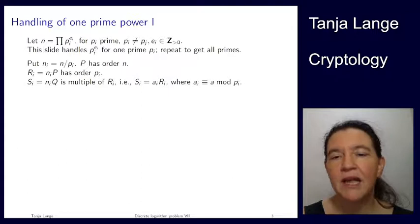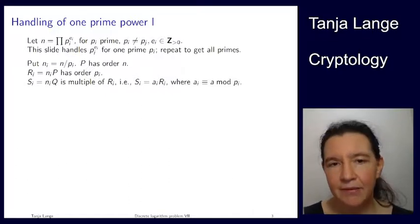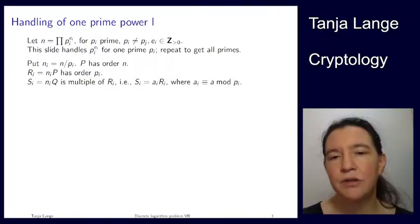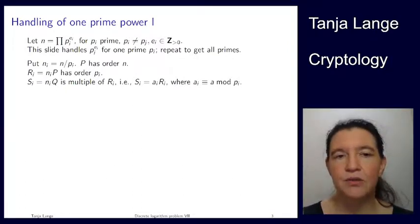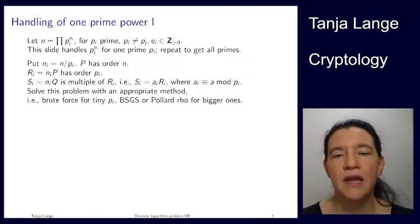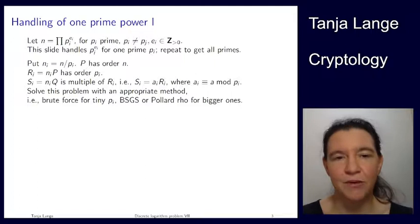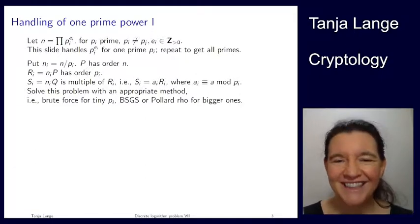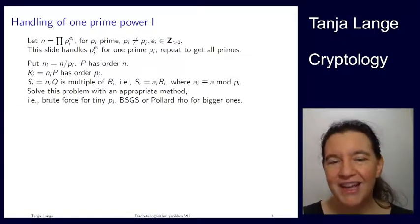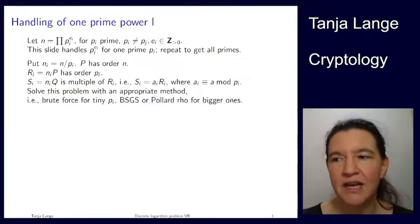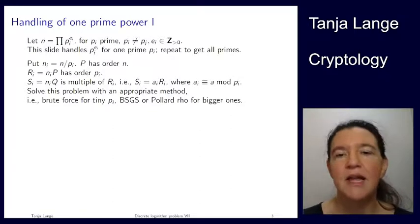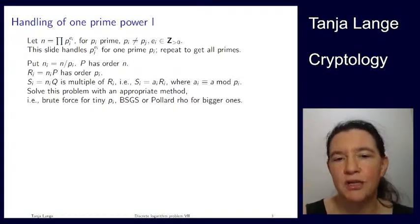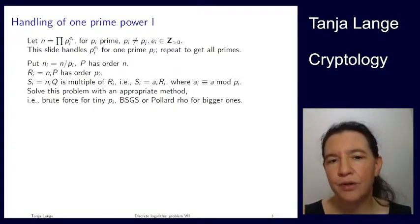And then we solve the discrete log. We're coming up with this ai. And we know that the a, the real discrete log, the big one, is congruent to ai mod pi. So we're doing the cost, well, we're doing a discrete log in size pi subgroup. And we're solving this with what feels appropriate for the size. So in the example that pi was 2, it's basically a brute force search, except we don't even notice that. If your group order is 3, you again would be brute force, 5 probably still.